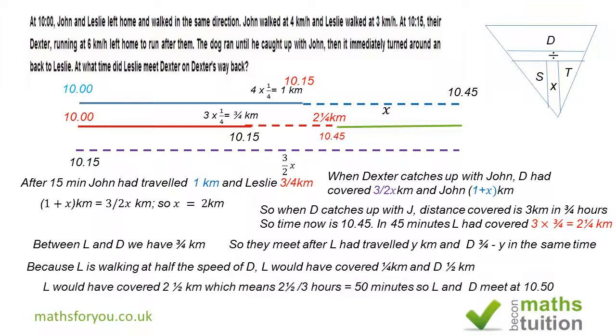If we divide two and a half kilometers, which is the distance, by the speed three, we end up with 50 minutes. If you add 50 to 10 o'clock, we get 10:50. So Leslie and Dexter meet up at 10:50.